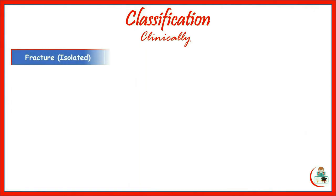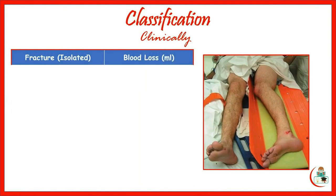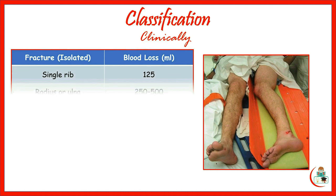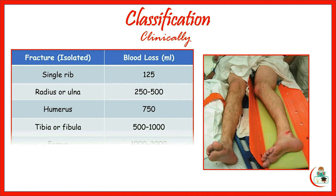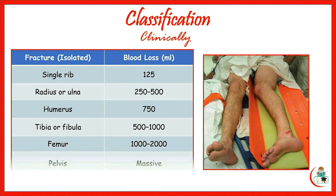The amount of blood loss at the fracture site is approximately 125 milliliters in an isolated rib fracture, quarter to half a liter in fracture of the radius or ulna, and so on. With fracture of the femur, the blood loss at the fracture site may be up to two liters. Retroperitoneal hematoma is usually massive and occurs in fractured pelvis.